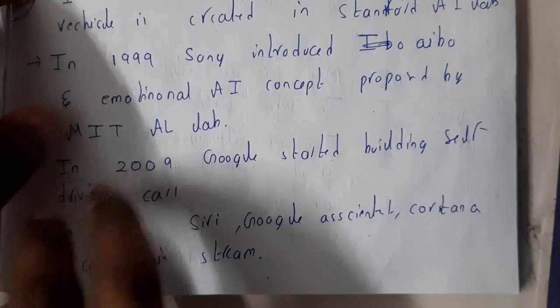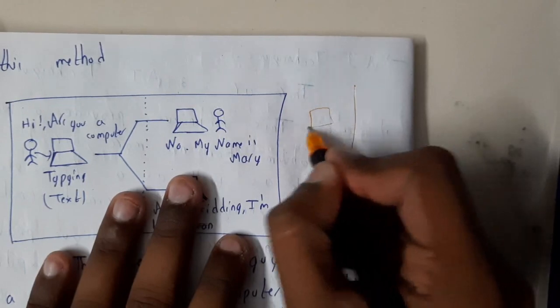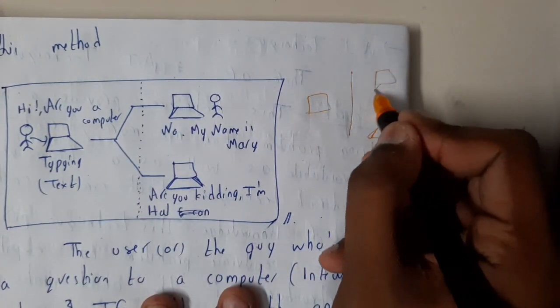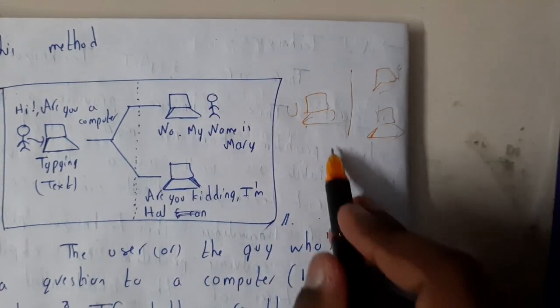The test will be in this way. Basically, you will be in another room, you are here, and there will be a person and there will be a robot. This will be operated by a person and this is you.